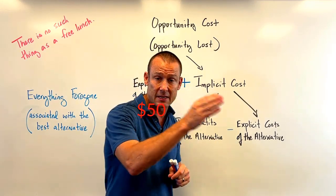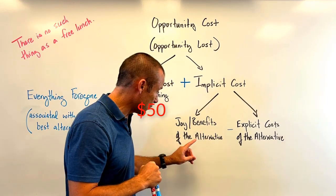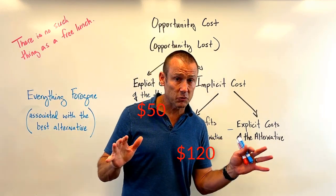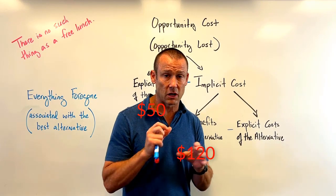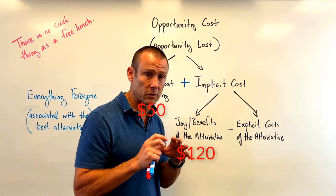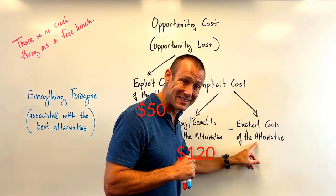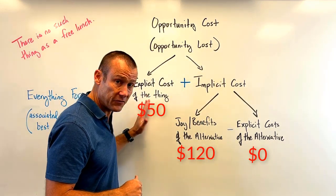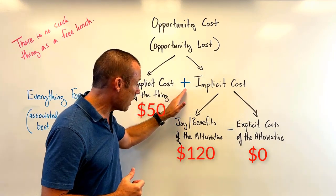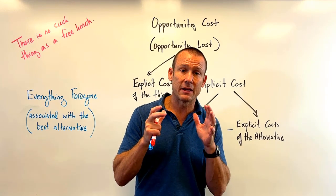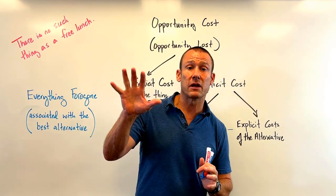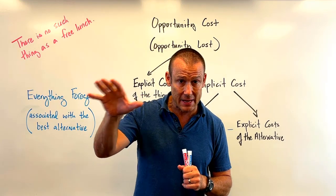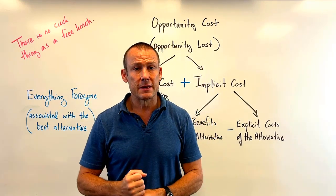The benefit of babysitting is easy to calculate: 10 hours times $12 equals $120. Babysitting has no explicit cost — say the family is next door, so no travel cost. So the opportunity cost of running the lemonade stand is $50 explicit plus $120 implicit minus $0, totaling $170. Lisa needs to project over $170 in revenues for it to make sense to open the lemonade stand.